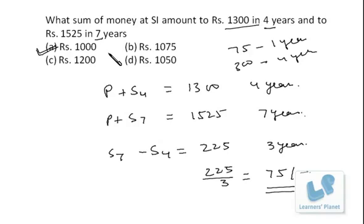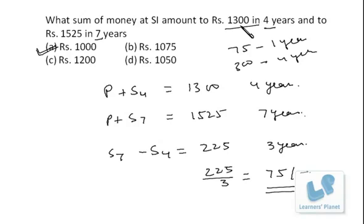Alternatively, you can go by options. Generally try to choose the option that looks quite easy. Suppose I take 1000 rupees. If it is 1000 rupees and it becomes 1300 in four years, then 300 rupees is the interest, meaning 75 rupees per annum. Now cross-verify: 75 rupees for seven years means 75 into 7, that is 525, so the total amount is 1525. That satisfies both conditions, confirming the principal of 1000 was correct.